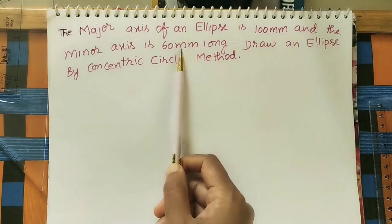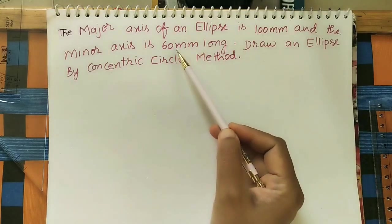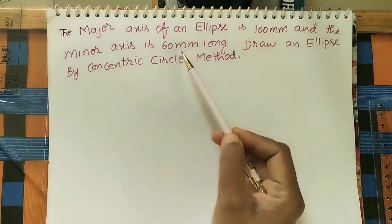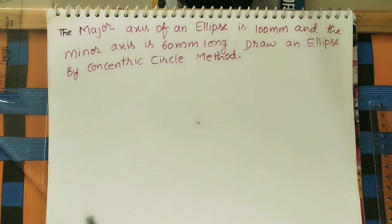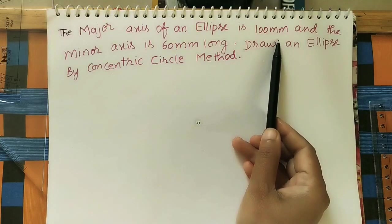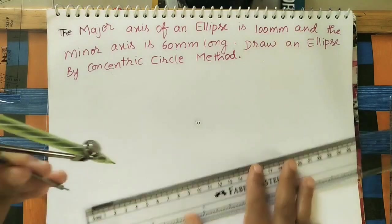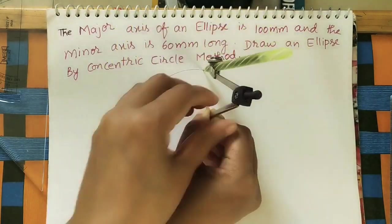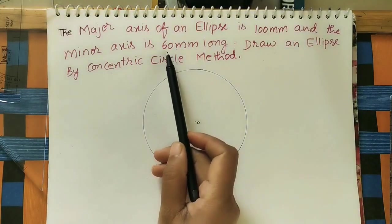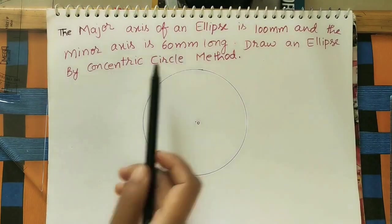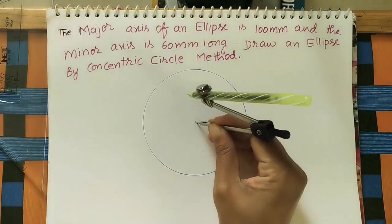In the concentric circle method, always remember we have to draw two circles — one with the major axis as diameter and one with the minor axis as diameter. One circle is 10 cm diameter, the other is 6 cm diameter. Mark one center O. With O as center, draw a circle of 10 cm diameter (5 cm radius), then another circle of 6 cm diameter (3 cm radius).